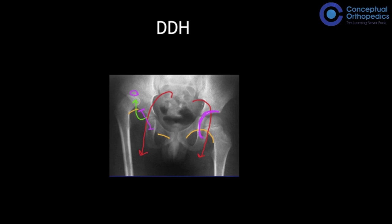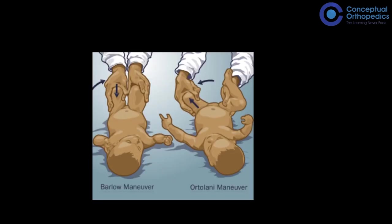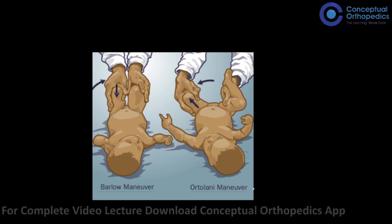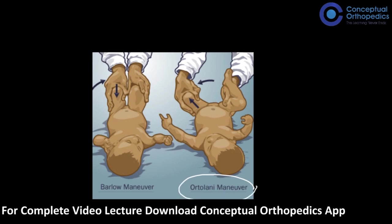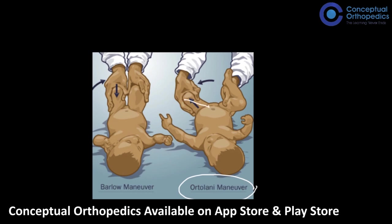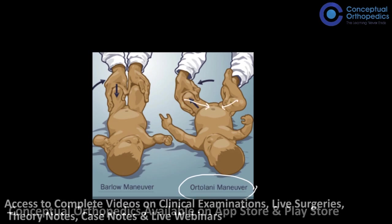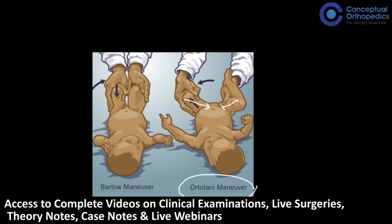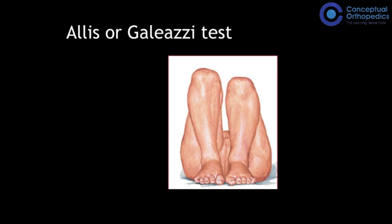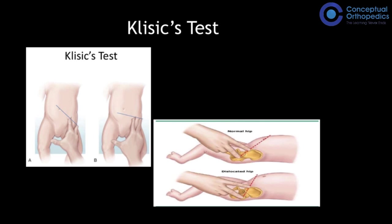The classic test for DDH: abducting the thighs brings the head back in — this is the Ortolani maneuver (Ortolani means reducing the hip inside); you will hear a click as the head reduces. The Barlow test is the dislocating maneuver — adduction pushes the head out. Once dislocated with Barlow, you use Ortolani to reduce it back. In the Allis (Galeazzi) test, with both hips and knees flexed, the dislocated side is lower. The classic test for bilateral DDH is also important.